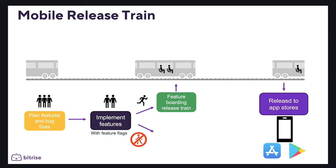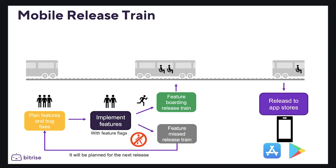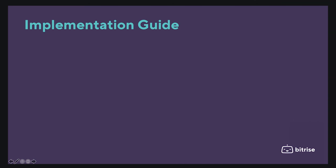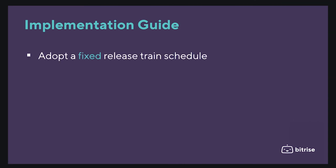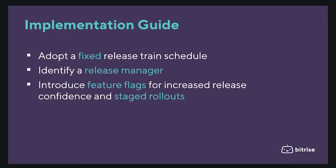When the content of the release is agreed and ready, there will be a final testing phase. To implement the release train for your app, you should adopt a fixed release train schedule, identify a release manager, introduce feature flags to increase release confidence, and use staged rollouts. I hope you enjoyed the video — see you in the next challenge, bye bye!